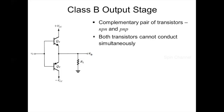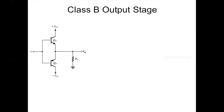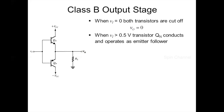In this circuit, when the input voltage Vi is 0, both transistors are cut off and the output voltage V0 is equal to 0. Now consider the case when Vi is positive. When Vi exceeds 0.5V, QN conducts and operates as an emitter follower.